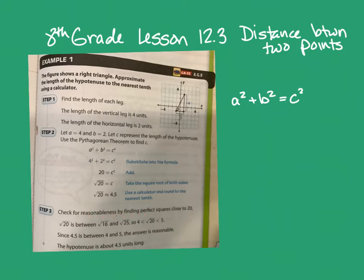Check for reasonableness — you can look and see it diagonally goes across four, so you knew it was going to be somewhere around four, a little longer. Remember we did this at the beginning of the year: you have the square root of 20. What's the perfect square just lower, and the perfect square just higher? The perfect square just lower is square root of 16, which is 4. The one just higher is square root of 25, which is 5. So you knew it would be between 4 and 5, and it is right in the middle at 4.5.